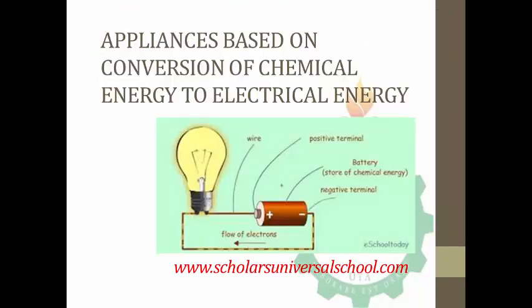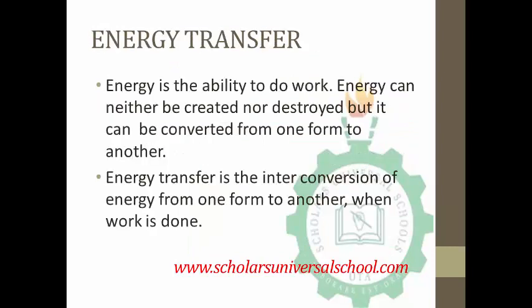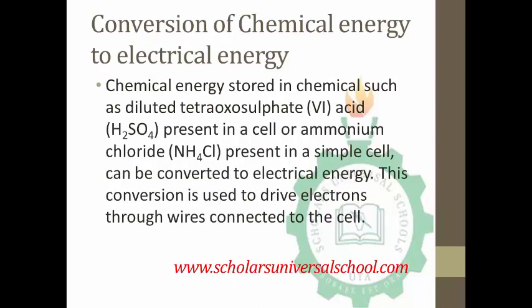To summarize: energy is the ability to do work, but energy can neither be created nor be destroyed — it can be converted from one form to another. This is known as energy transfer. The conversion of chemical energy to electrical energy is such that the chemical in a cell — for example, H2SO4 or NH4Cl — is converted and used to drive electrons through wires connected to the cell, therefore supplying electricity.